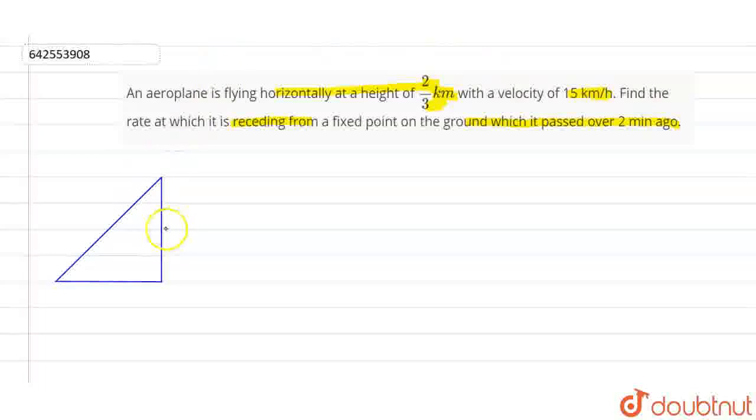Check out this figure. Let's suppose this is point P, this one is point Q, and this one is R. So basically what it's trying to say is that the plane is flying horizontally in this direction with a speed of 15 km per hour.